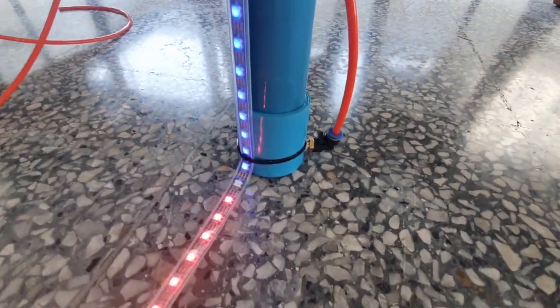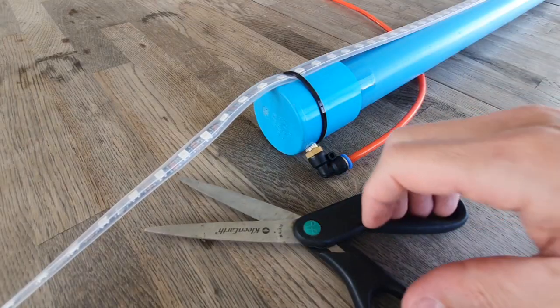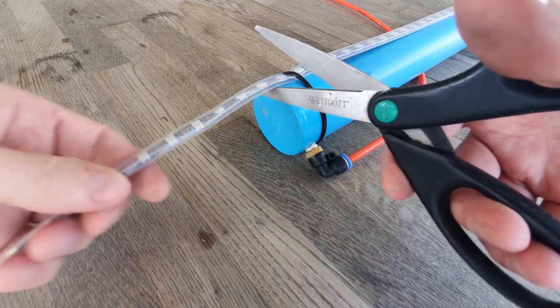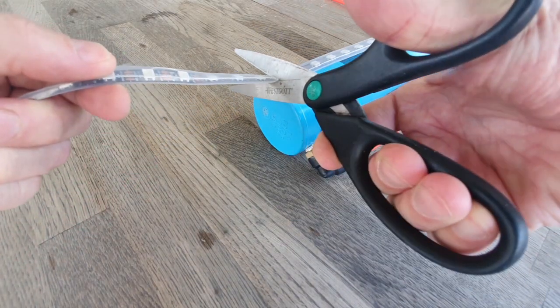To calibrate the device, you simply take a pair of scissors and cut the LED strip to the same height as your tank. It's as simple as that.